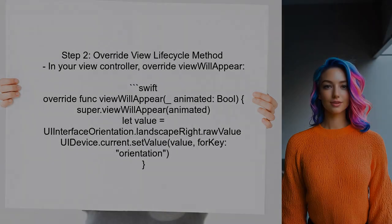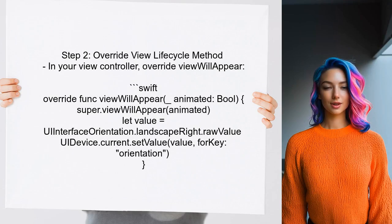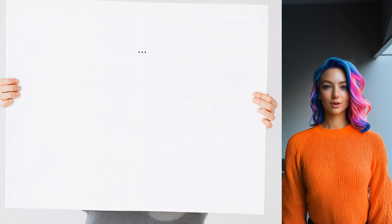Next, the user should implement the orientation change in the ViewController's lifecycle methods. Specifically, they can override the ViewWillAppear method to set the desired orientation.